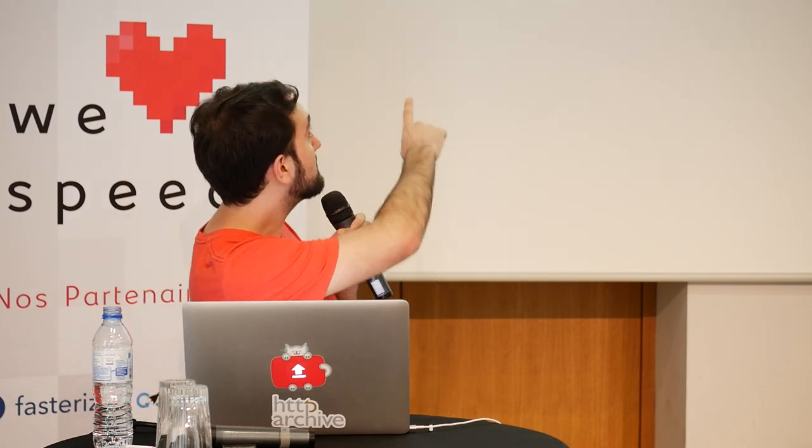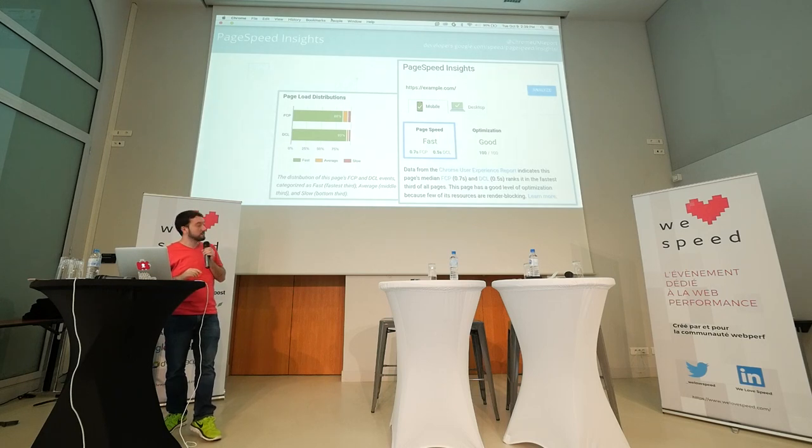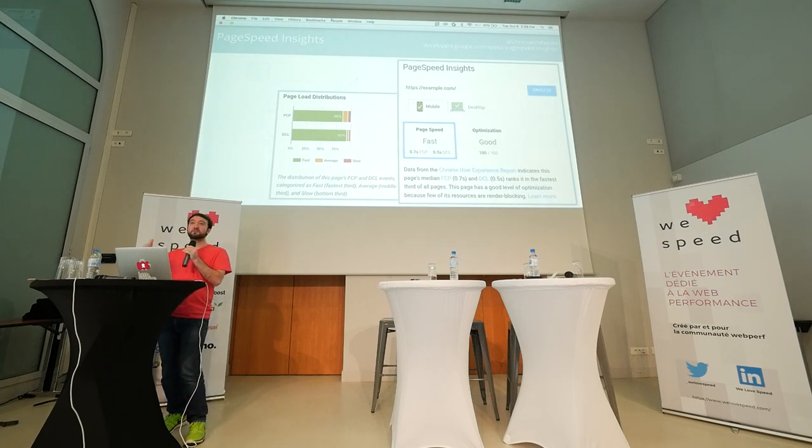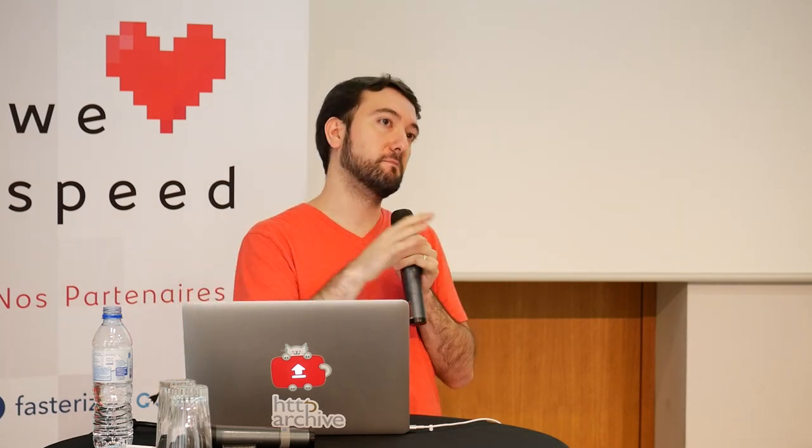It shows the distributions for both FCP and DOMContentLoaded, and it's showing charts similar to what we generated in BigQuery. There are some differences here: this uses a rolling 30-day aggregation window, from the date that we look it up on PageSpeed Insights all the way back 30 days. Again, the BigQuery dataset was just the calendar month — for example, August or September.